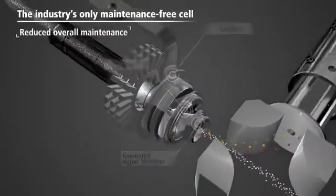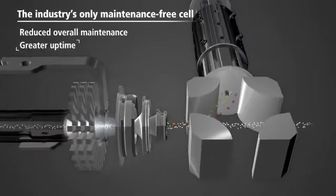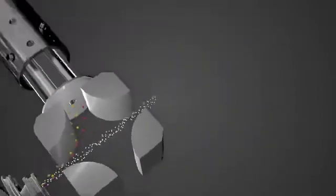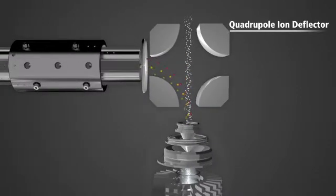It's the only ICP-MS with a cell that never needs replacement, so you'll spend more time running samples and less time on maintenance. Bending the beam 90 degrees, the quadrupole ion deflector is one of three quadrupoles in the instrument. Ions of a specific mass range are passed into the next quadrupole while simultaneously filtering off neutrals and other unwanted material.